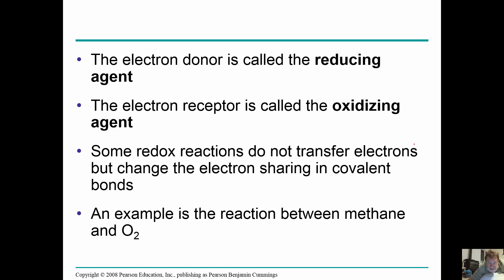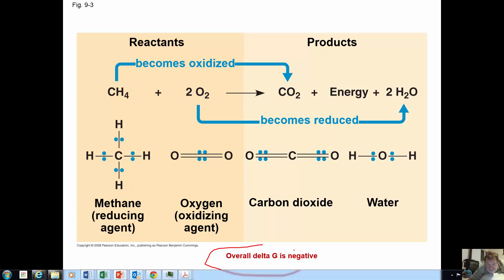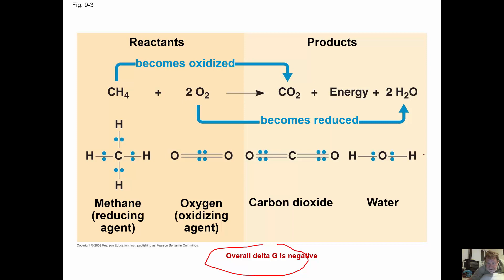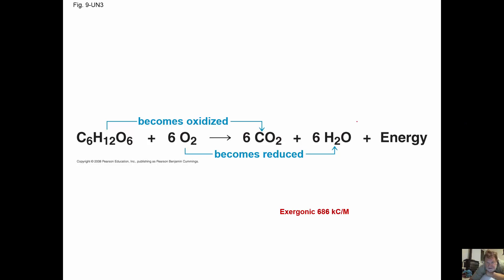The electron donor is called a reducing agent because it causes something to be reduced. The electron receptor is called the oxidizing agent because it causes something to be oxidized. Looking at methane and oxygen: oxygen becomes reduced, gaining hydrogen ions plus electrons. The delta G for this is negative, which is why we can burn these things and get energy. During cellular respiration, fuel such as glucose is oxidized, oxygen is reduced to water, and the carbon from the sugar becomes carbon dioxide.